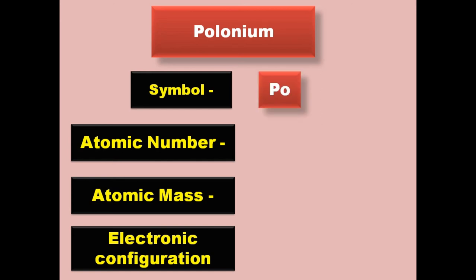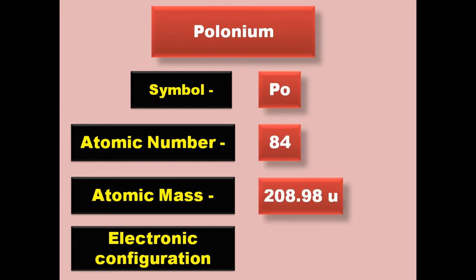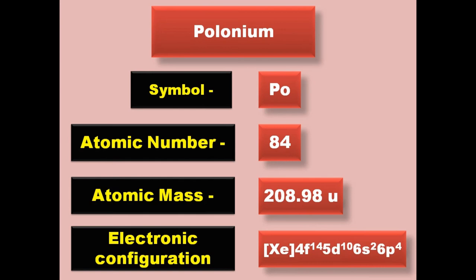Polonium has symbol Po, atomic number 84, atomic mass 208.98, electronic configuration [Xe] 4f14 5d10 6s2 6p4. Polonium is a metalloid and exists in solid form at room temperature.